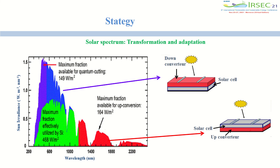Recent studies have suggested that rare earth ions can contribute to solving this problem, thanks to their spectral modification characteristics using the process of up- and down-conversion. To cover the blue part of the solar spectrum, we can use a layer of down-converter at the front of the solar cell, and for the red part, we can use an up-converter layer at the rear of the solar cell.